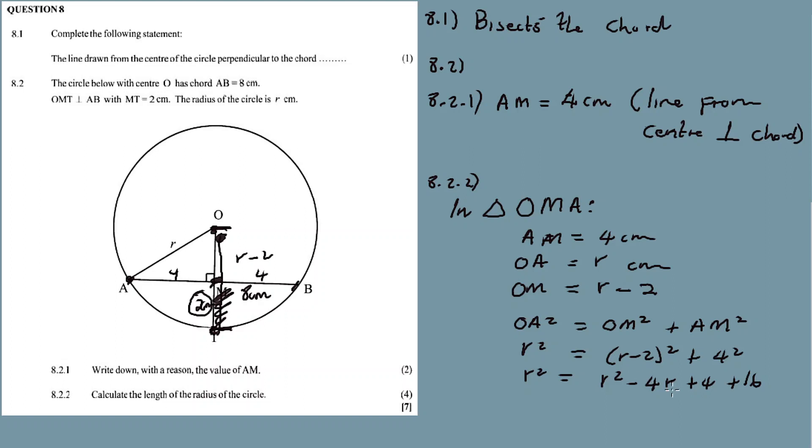Now solve for R. There's no need to move everything. R squared minus R squared, plus 4R. 4 plus 16 is 20. So 4R is equal to 20. 20 divided by 4, divide by 4. The answer is R equal to 5 centimeters.